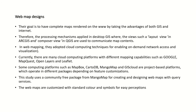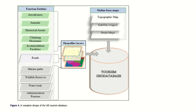This study uses a community-free package from MangoMap for creating and designing web maps with query services. Web maps are customized with standard colors and symbols for easy use. The completed GIS tourism database design includes tourist entities, online base maps, and shapefile layers: aerodromes, animals, historical assets, climbing mountains, accommodation facilities, roads, marine parks, wildlife reserves, water bodies, administration regions, topographic maps, satellite imagery, and street maps — all combined into a tourism geodatabase.